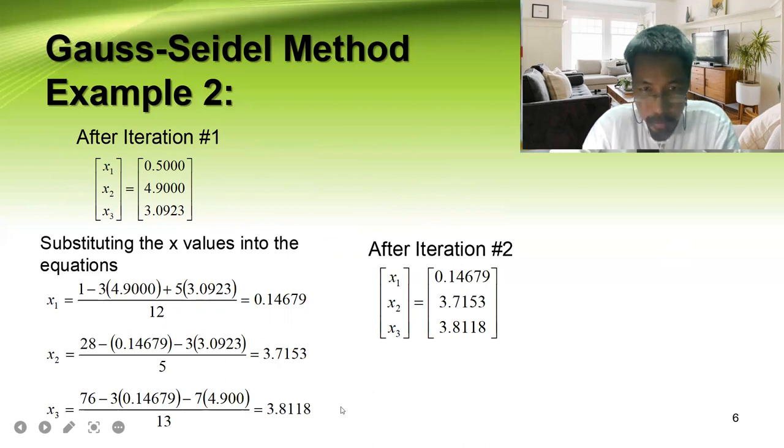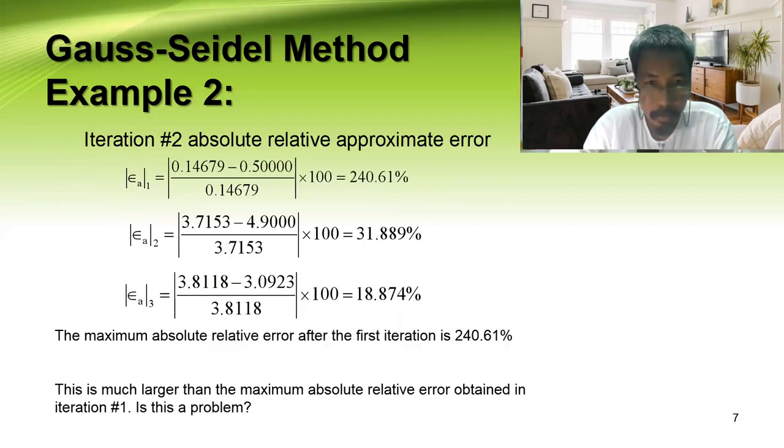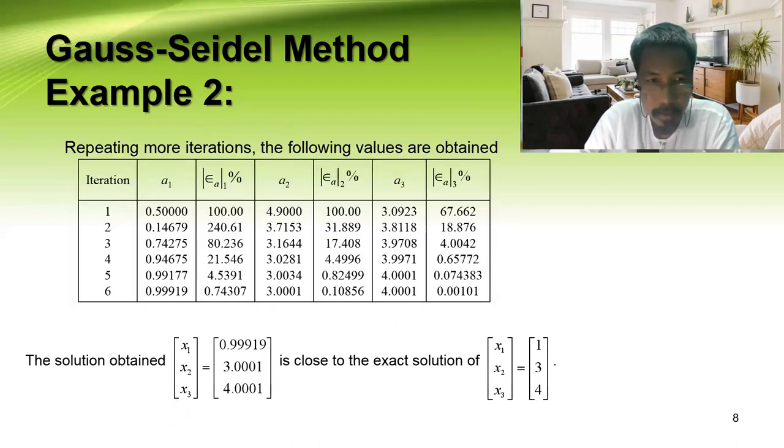Let's do the absolute relative error. The maximum here is 240 percent. This is much larger than the maximum absolute relative error in iteration one. Is this a problem? 100% on the first iteration, but now it is 240%. Let us do it up to six iterations.